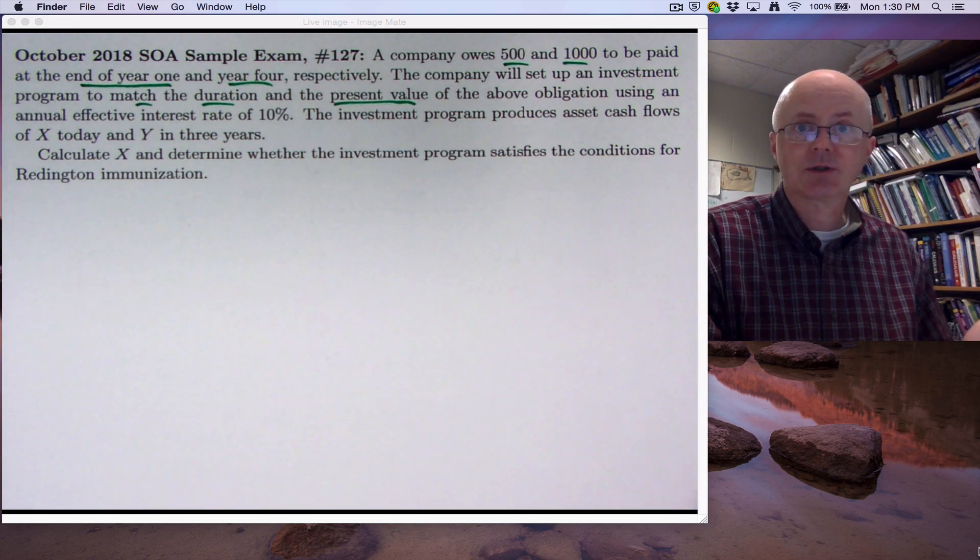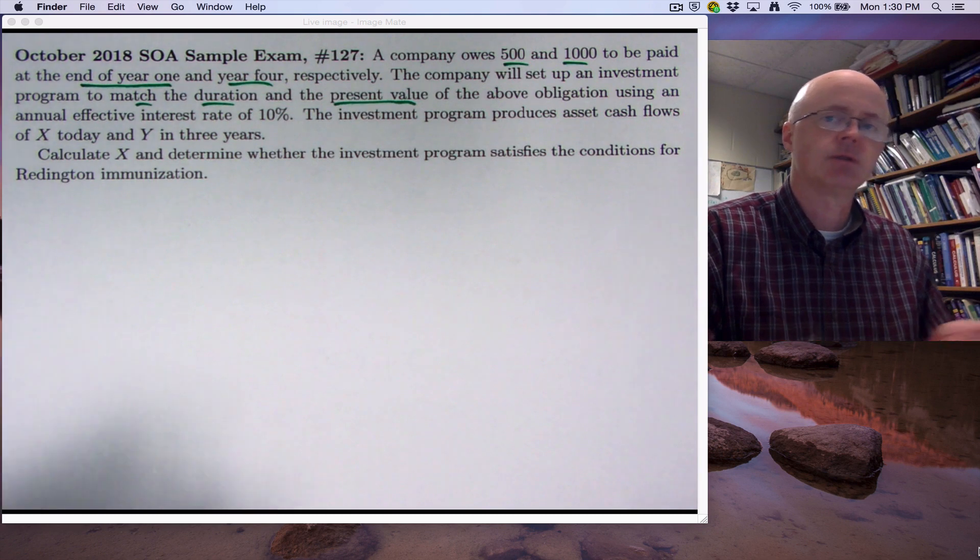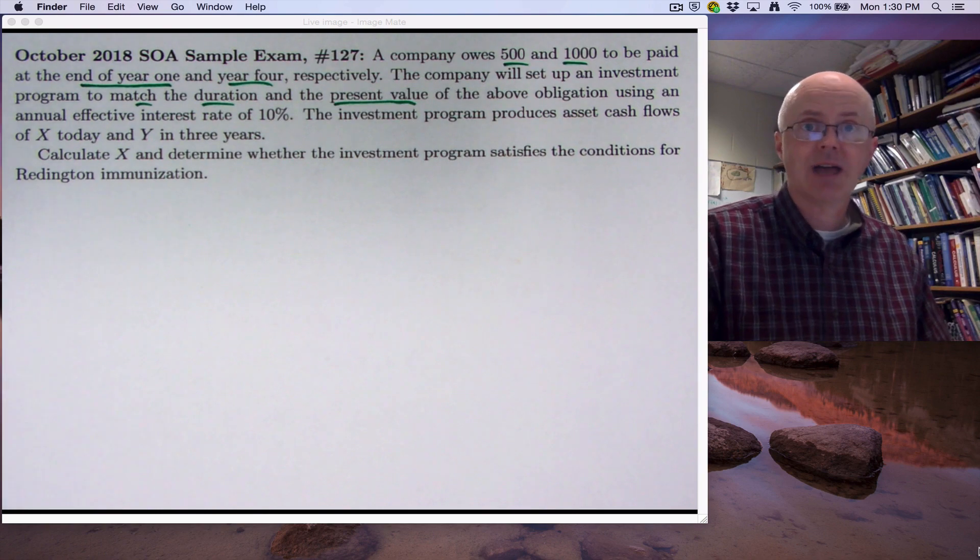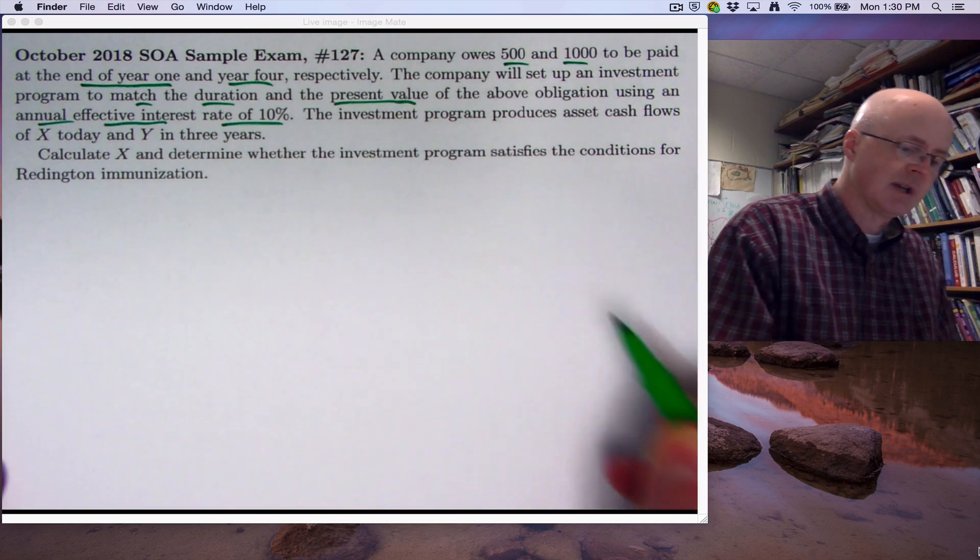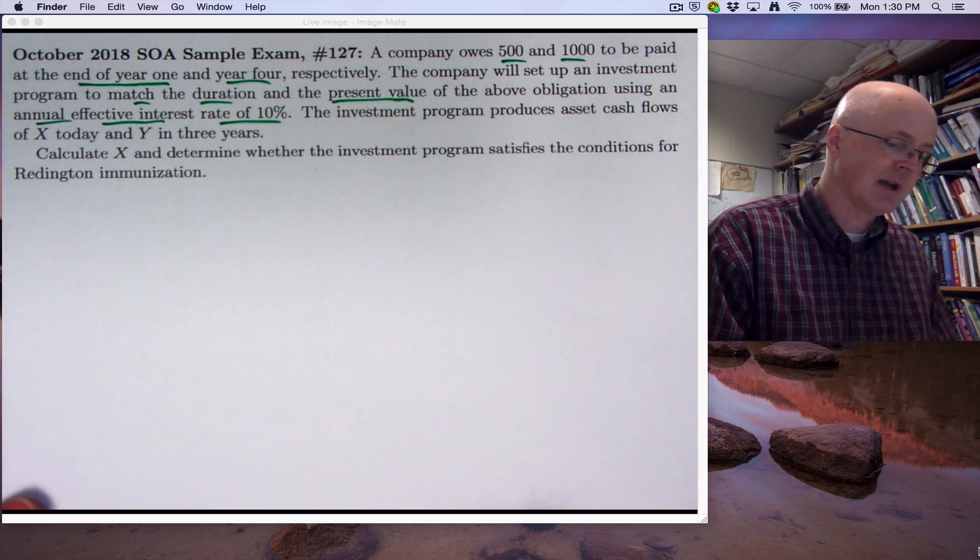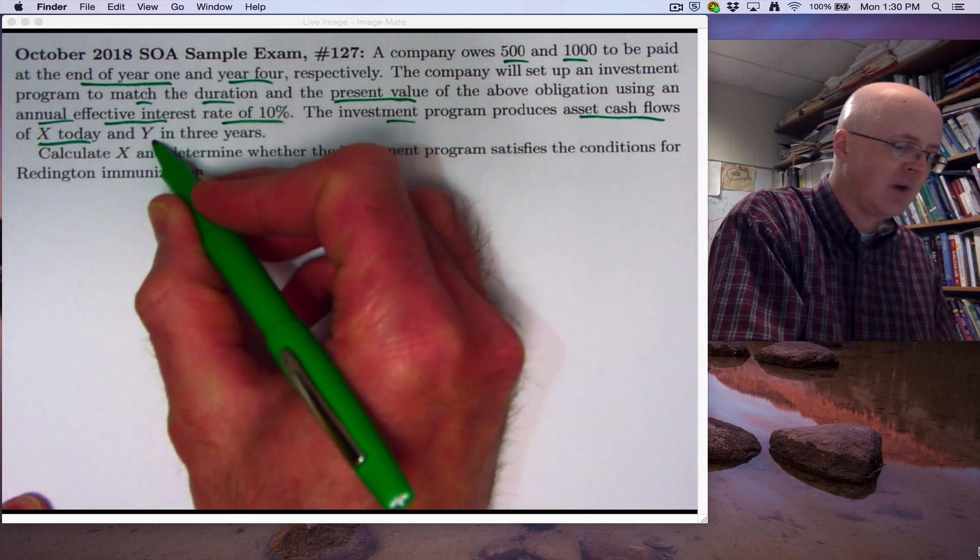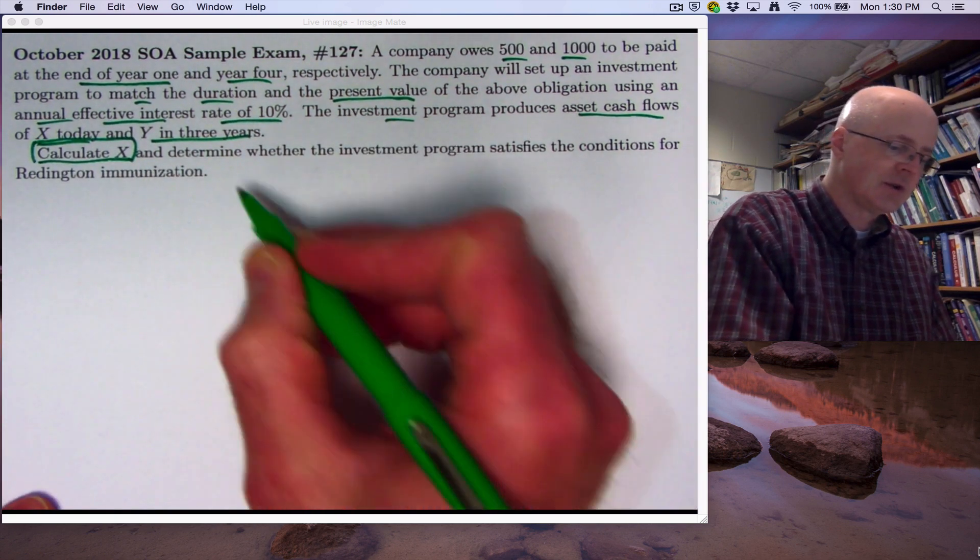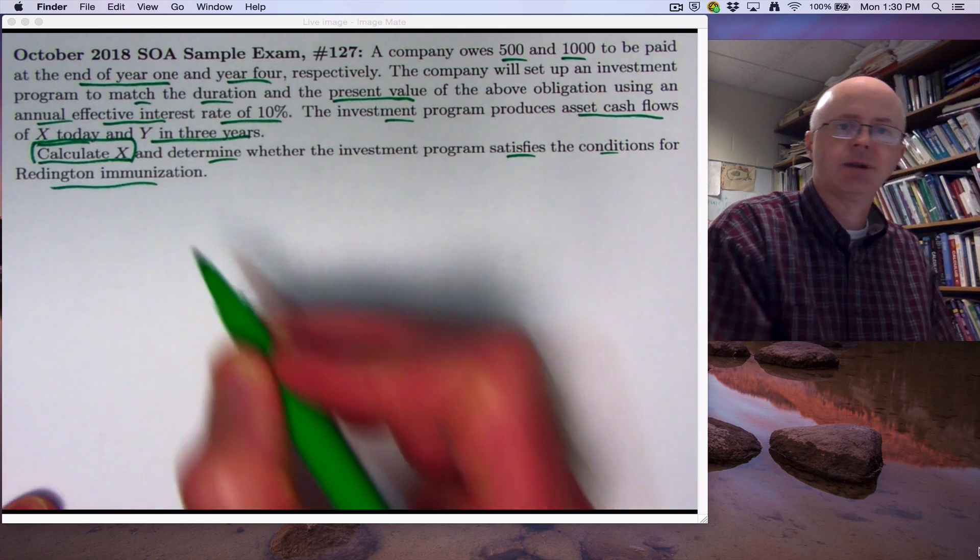Using a certain interest rate, these things are always with respect to a certain interest rate. In the simplest situation like this, we are assuming the yield curve is flat. Things could be more complicated by assuming a non-flat yield curve, but we want to keep things simple. We've got an annual effective interest rate of 10%. We want some assets that are going to help us to cover those liabilities. We want an investment program that's going to produce asset cash flows of X today and Y in three years.